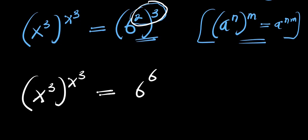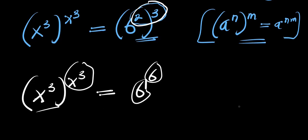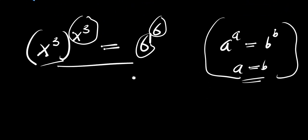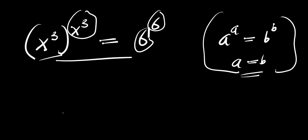Now observe: x power 3 and 6, x power 3 and 6 — they are the same. Considering this identity, if you have a power a equals b power b, you can have a equals b. Applying this identity, we are simply going to have x power 3 equals 6.